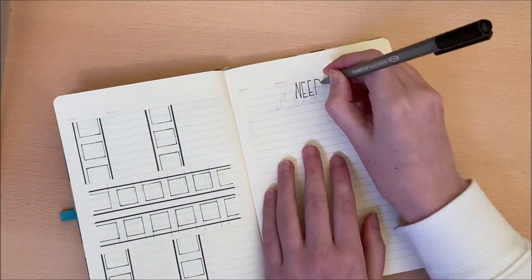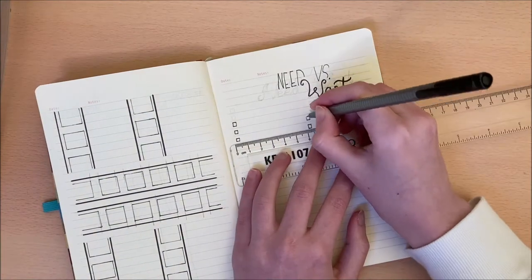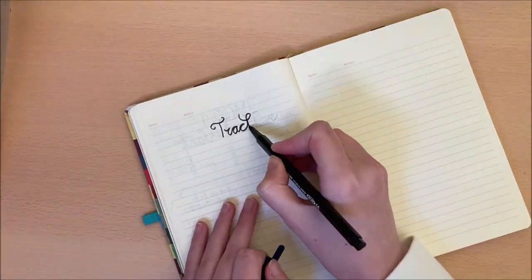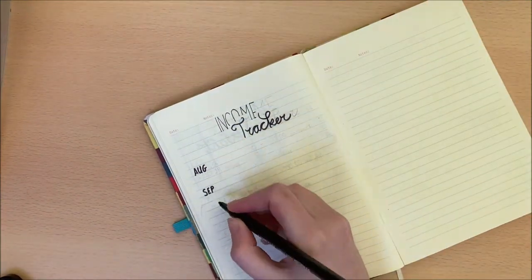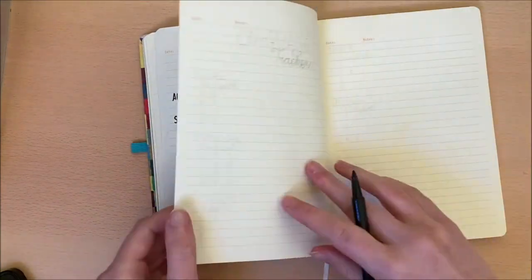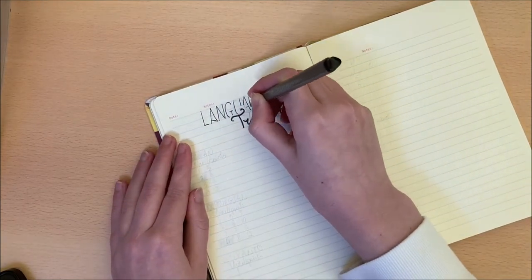After that I have a need versus want page. I am super guilty of buying things that I want over things that I need. So this is a good way to keep track of shopping lists. And I've also included an income tracker for different months to make sure that I'm not overspending and that I'm saving how much I want to save.